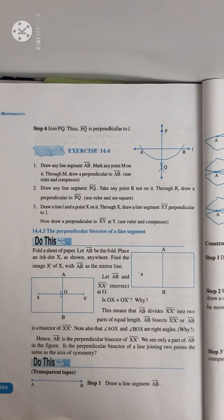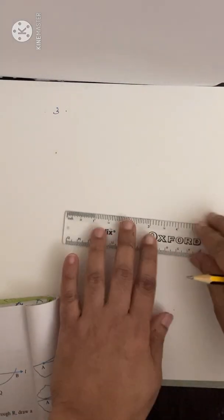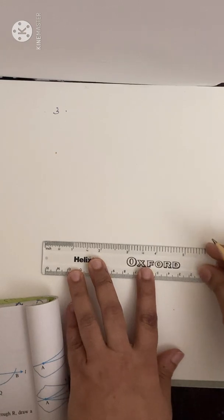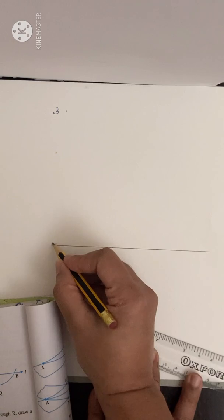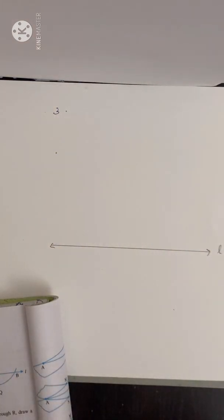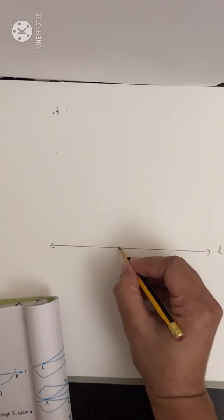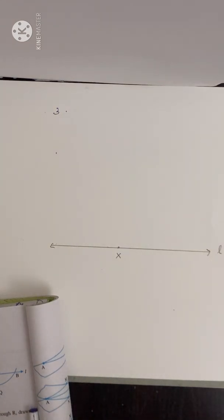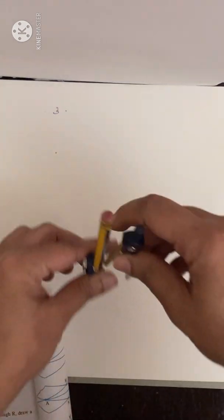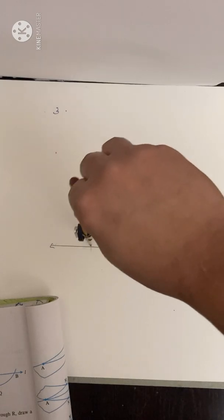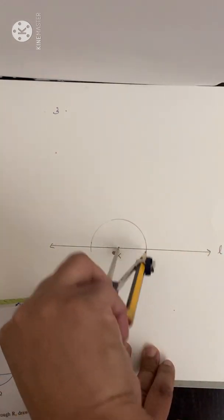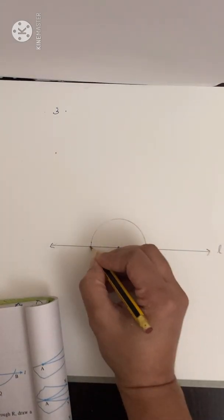Now let's move to question number three: draw a line L and a point X on it, through X draw a line segment XY perpendicular to L, then draw a perpendicular to XY at Y using ruler and compasses. First draw line L — it is a line so no endpoints. Mark a point X on it. Take X as center with a convenient radius and draw an arc that intersects line L at two points.